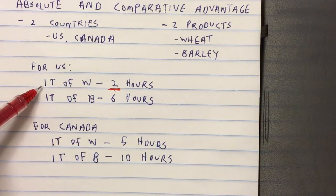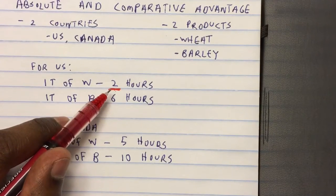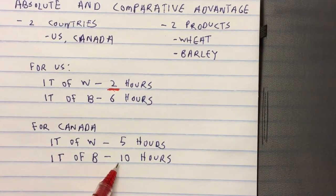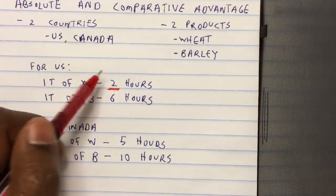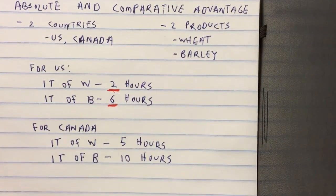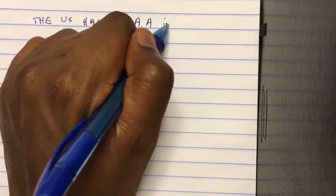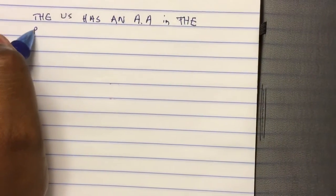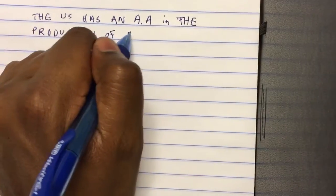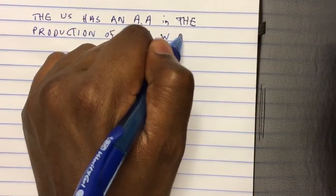So we can say that the US has an absolute advantage in the production of wheat. Canada has an absolute advantage in the production of neither wheat nor barley, because the US has an absolute advantage in the production of both wheat and barley.